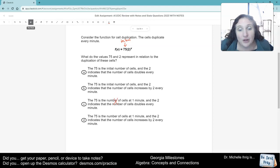So right away, we know it can't be C or D because 75 says it's the number of cells at one minute. And it's not. It's always the initial value.